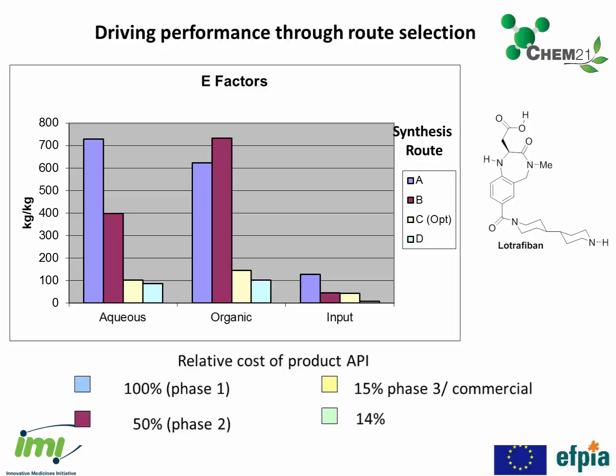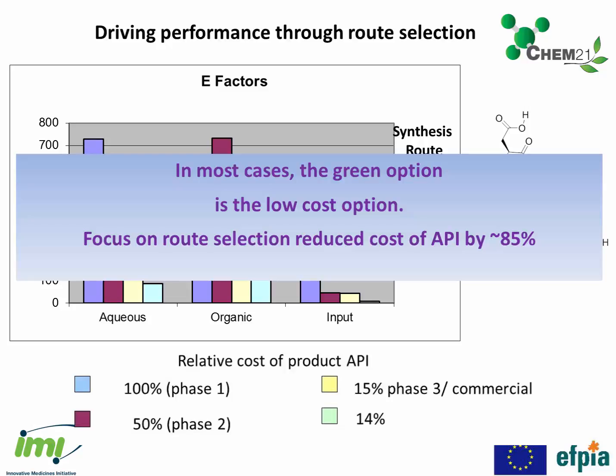This has two important consequences: the environmental profile of the processes is dramatically improved, and the cost of the API also falls dramatically as we refine the processes and achieve much better throughput. The impact of good route selection can be vital to the commercial viability of a product. Route A, used at the medicinal chemistry stage, would be far too costly, resulting in a product too expensive for the market. By developing better, more cost-efficient routes B, C, and D, we now have a manufacturing cost that's acceptable and the product can be dosed to patients at an acceptable price. Through good route selection, we've reduced the cost of this API by around 85%.